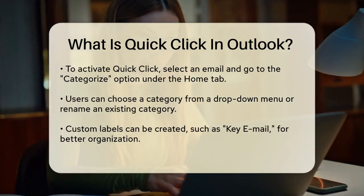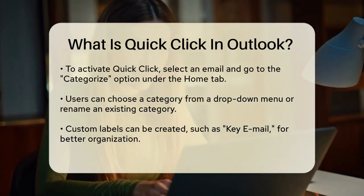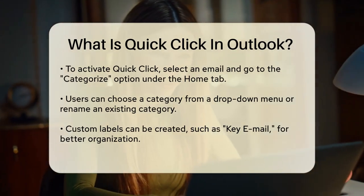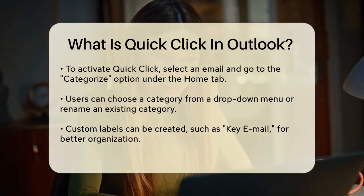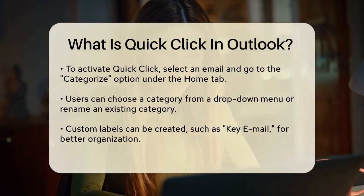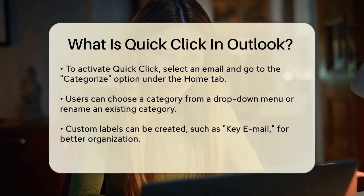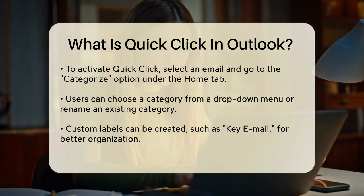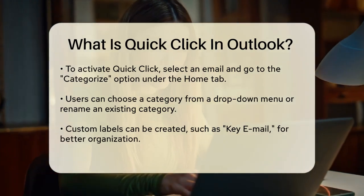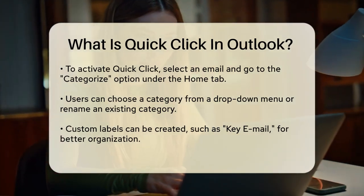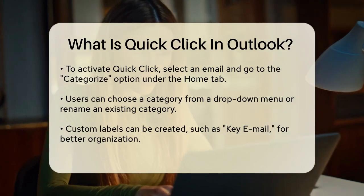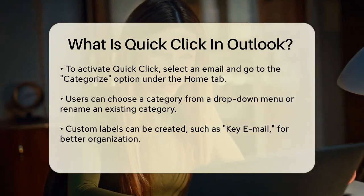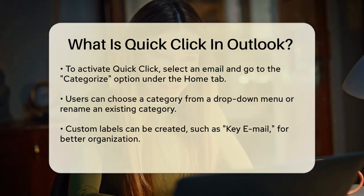For example, you can change the default red category to Key Email, or any other label that suits your needs, so that it stands out as important but doesn't get flagged as an action item.